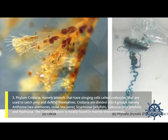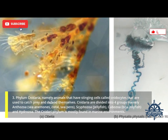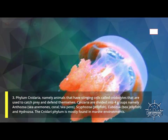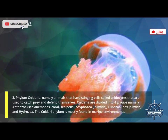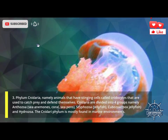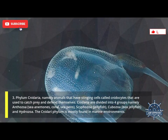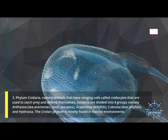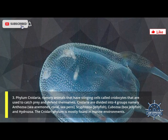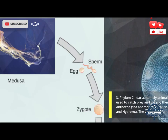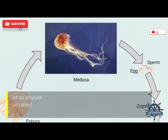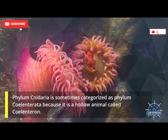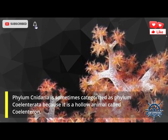Third, Phylum Cnidaria — animals that have stinging cells called cnidocytes, used to catch prey and defend themselves. Cnidaria are divided into four groups: Anthozoa (sea anemones, coral, sea pens), Scyphozoa (jellyfish), Cubozoa (box jellyfish), and Hydrozoa. The Cnidaria phylum is mostly found in marine environments and is sometimes categorized as Phylum Coelenterata, as they are hollow animals called Coelenterins.